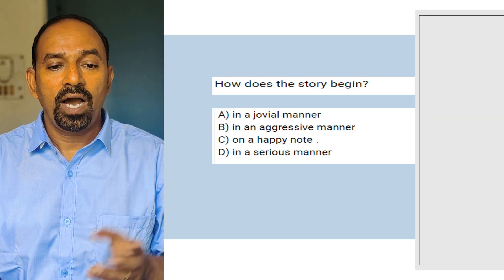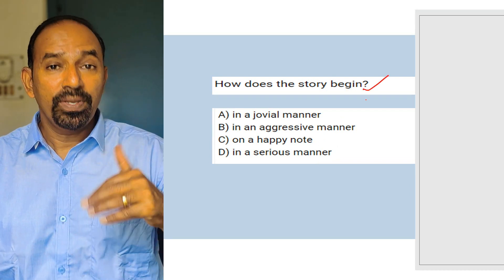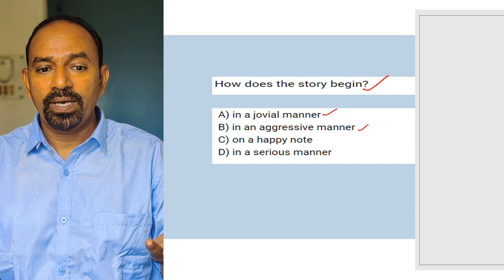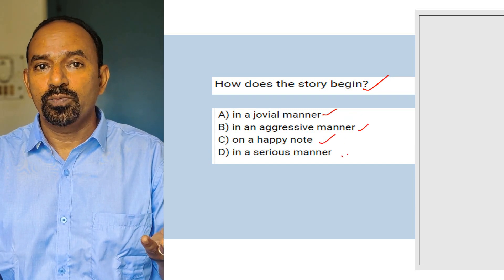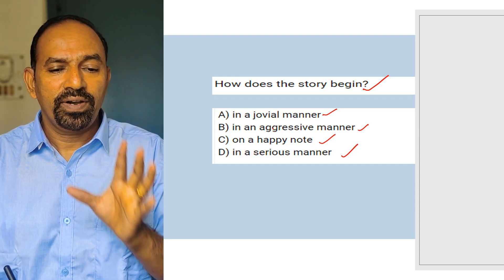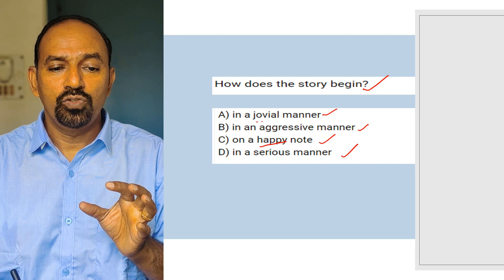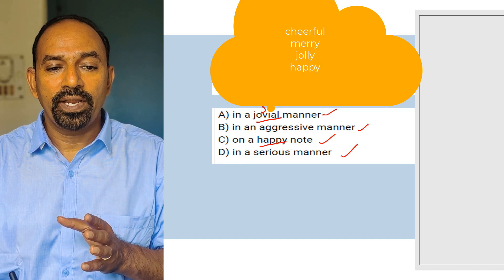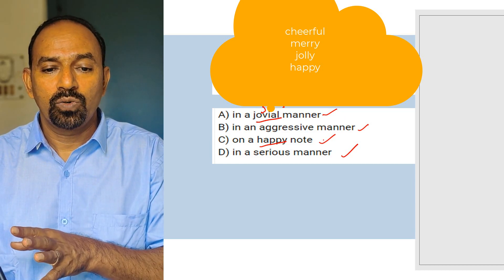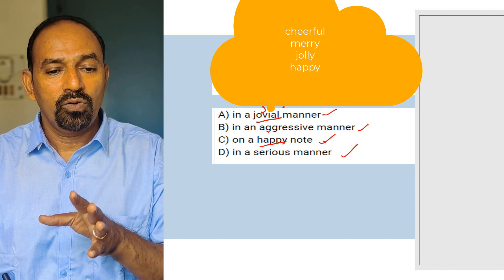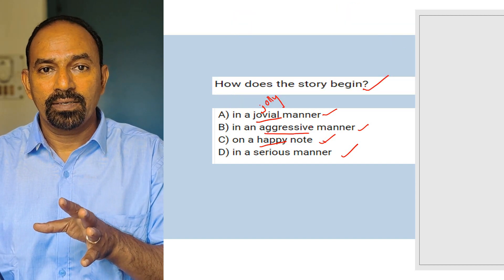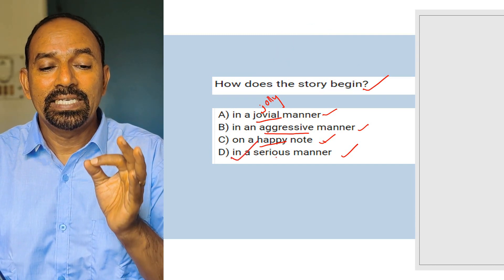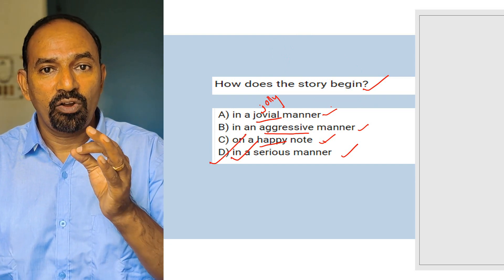Next question: How does the story begin? Options: in a jovial manner; in an aggressive manner; on a happy note; in a serious manner. Note that happy and jovial have the same meaning, so those are repetitive options. Aggressive means in an attacking manner. The story starts in a serious manner, so D is the right option.